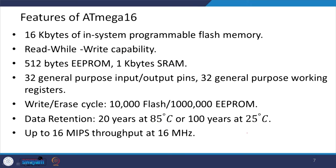The features of the ATMEGA16 include: 16 kilobytes of in-system programmable flash memory with read-while-write capability, 512 bytes of EEPROM, 1 kilobyte of SRAM, 32 general-purpose I/O pins, and 32 general-purpose working registers. Write/erase cycles are 10,000 for flash or 1 million for EEPROM. Data retention is 20 years at 85°C or 100 years at 25°C, and up to 16 MIPS throughput at 16 MHz.